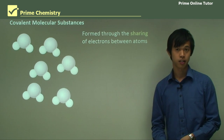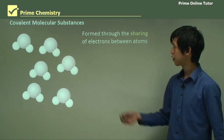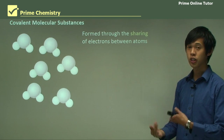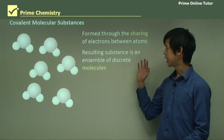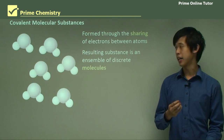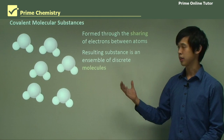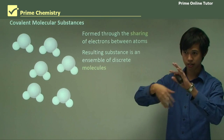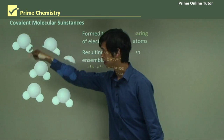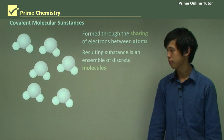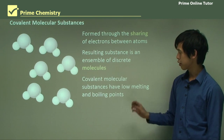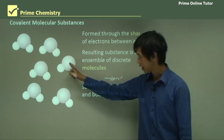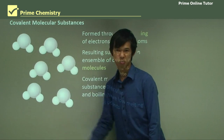Moving on to covalent molecular substances, which are formed through the sharing of electrons between atoms. The covalent bond is formed by the sharing of electrons, resulting in an ensemble of discrete particles called molecules. Covalent molecular substances have very low boiling and melting points because the attraction between these molecules is practically zero.